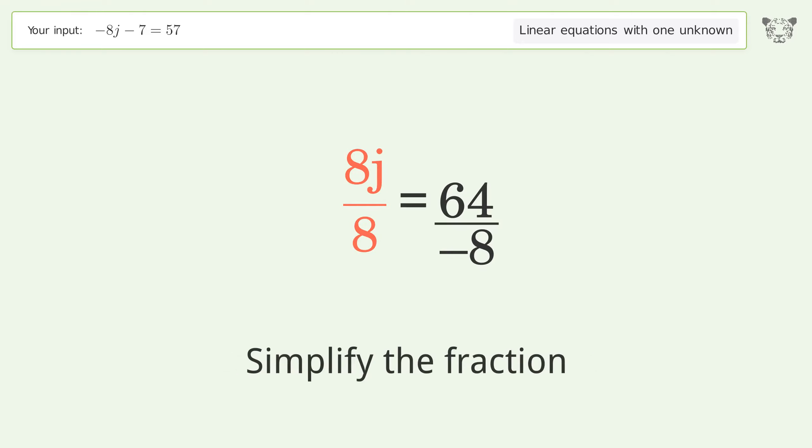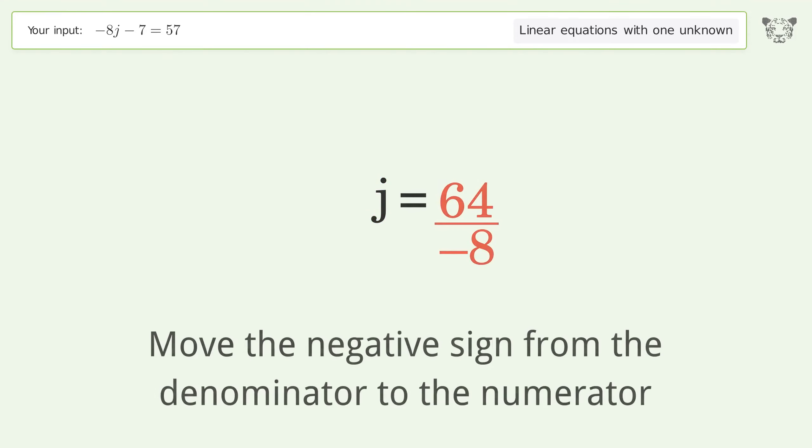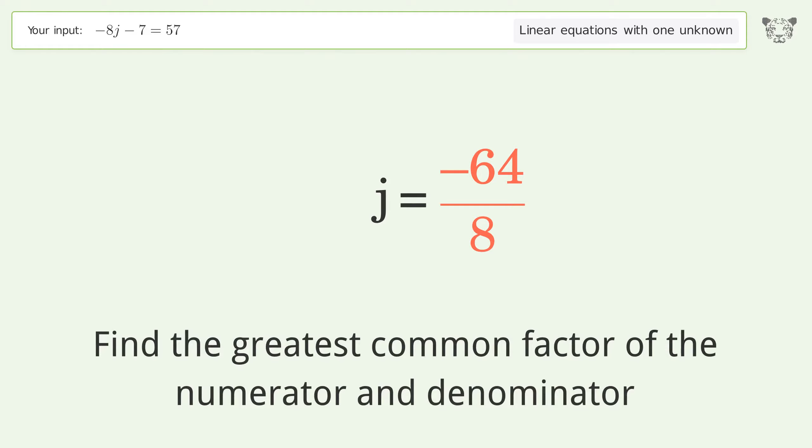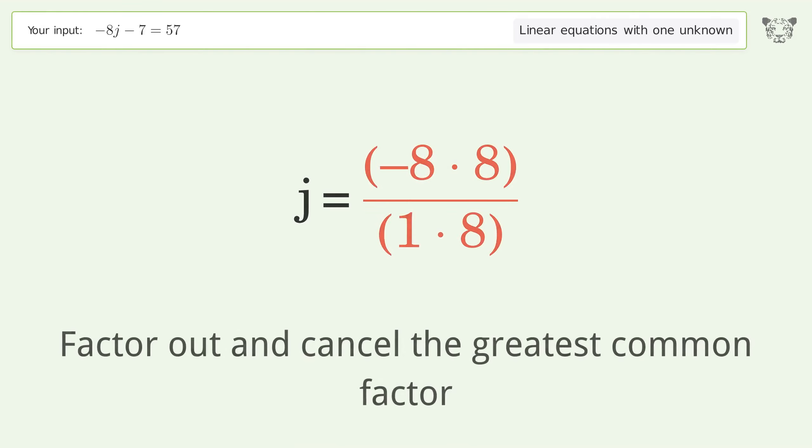Simplify the fraction. Move the negative sign from the denominator to the numerator. Find the greatest common factor of the numerator and denominator. Factor out and cancel the greatest common factor.